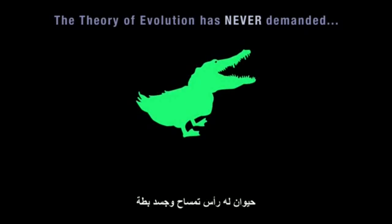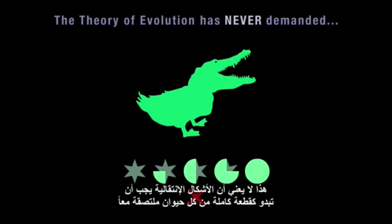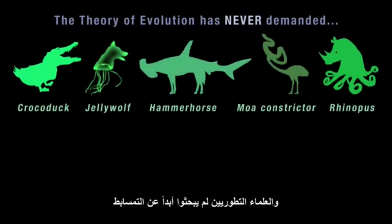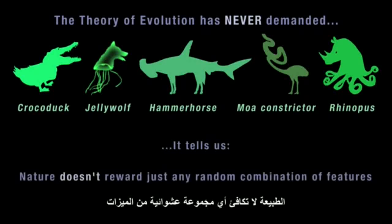The theory of evolution has never demanded the existence of animals with a crocodile's head and a duck's body. Even when there's evidence that one animal evolved directly from another, that doesn't mean the transitional forms must look like whole chunks of each animal stuck together. Evolution doesn't work by combining different species at random, and evolutionary scientists have never hunted for the Crocoduck, the Jelly Wolf or the Rhino Puss. The theory of evolution tells us something very different.